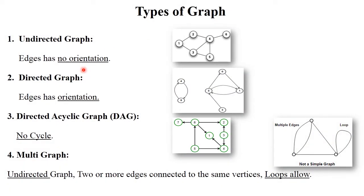There are some basic types of graph. The first one is undirected graph. Undirected graph means there is no edge direction — edges have no orientation. As seen in the diagram, no direction is shown, so this is called an undirected graph.